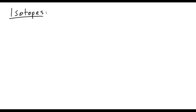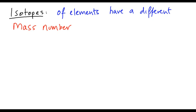And now I'm going to go through isotopes. Isotopes of all elements have a different mass number but the same atomic number.